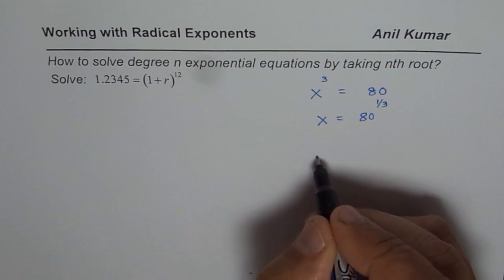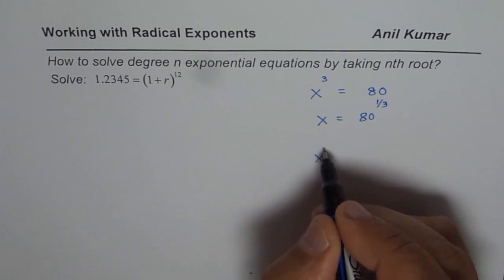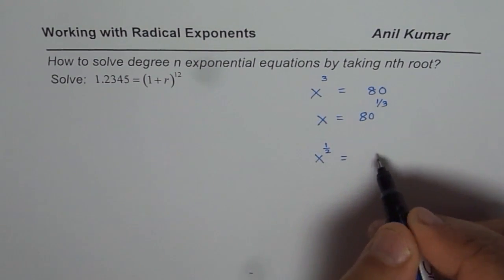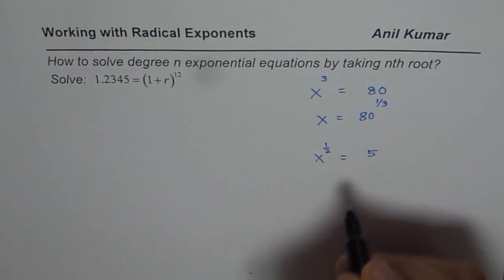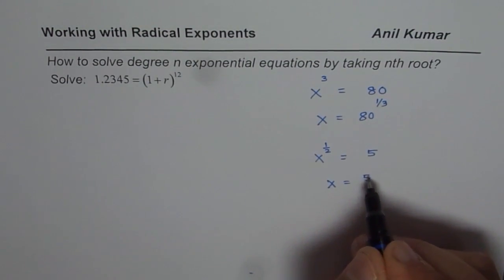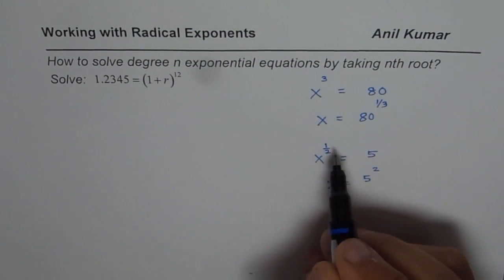If I have an equation which is, let us say, x to the power of 1 over 2 equals to, let us say 5. In that case, the solution will be x equals to 5 squared, right? So we kind of flip this.